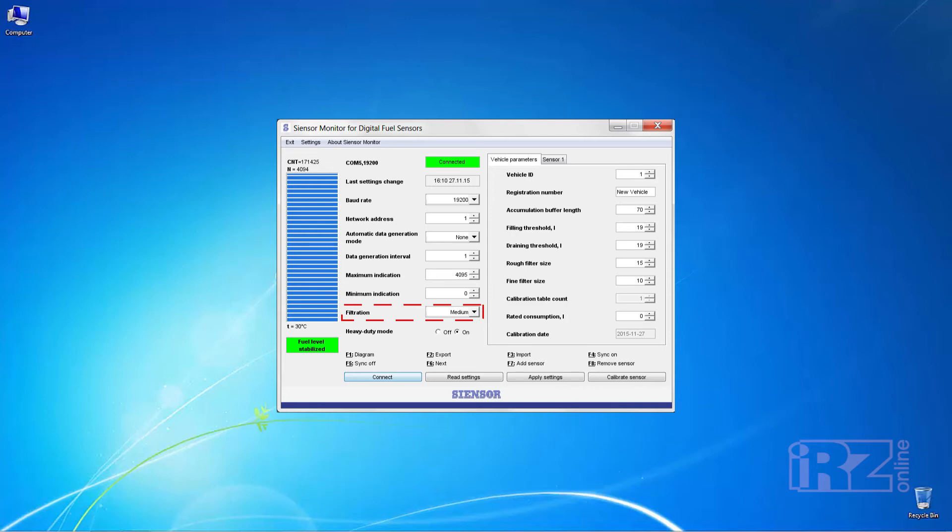For a higher precision assessment of the fuel level fluctuations in the tank, there is the filtration function. Deactivate this function only when you use the sensor on stationary objects. When you operate your vehicle in severe road conditions, road terrain, mines, quarries, we recommend switching on the mode extreme duty cycles. After all the settings, choose apply settings.